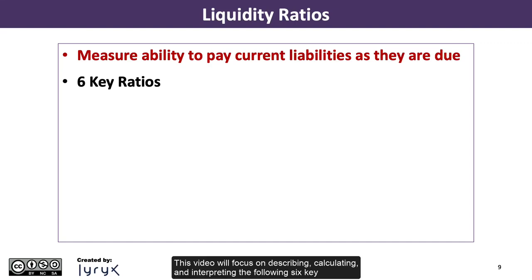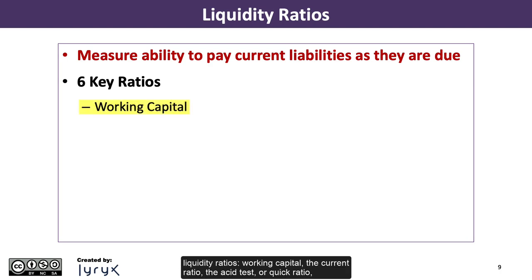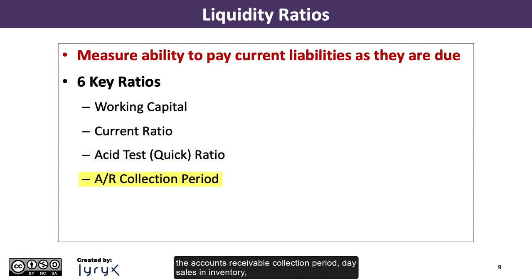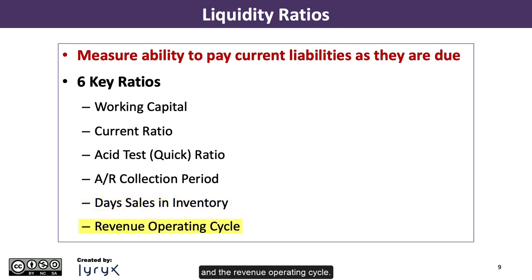This video will focus on describing, calculating, and interpreting the following six key liquidity ratios: working capital, the current ratio, the acid test or quick ratio, the accounts receivable collection period, days sales in inventory, and the revenue operating cycle.